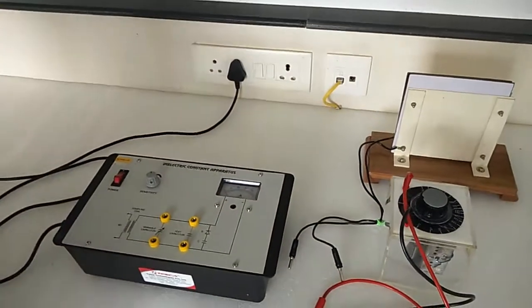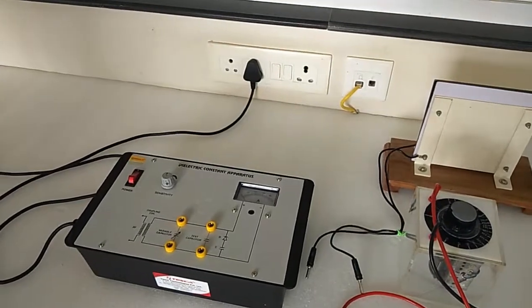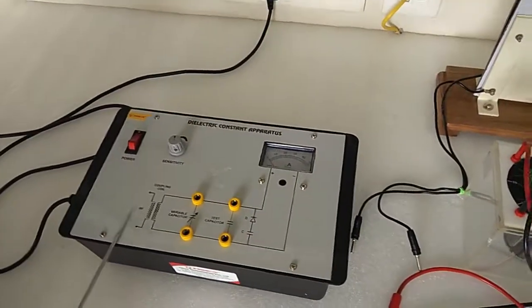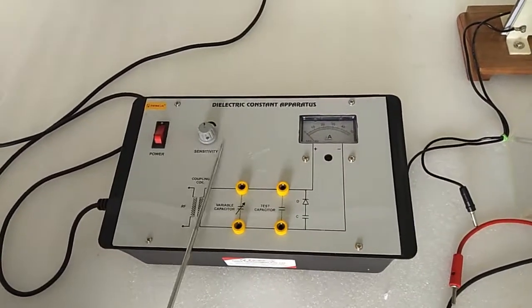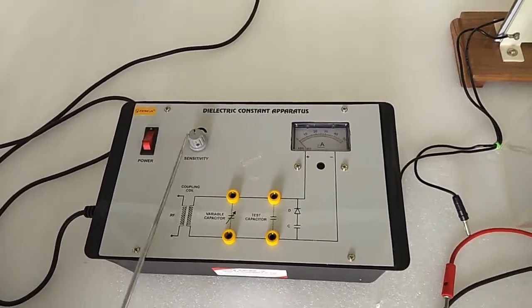Today we are going to show you our dielectric constant apparatus. This is the trainer kit. This is the main switch to turn on or off the kit. This is the sensitivity knob to set the sensitivity.